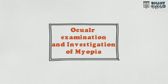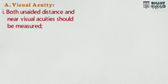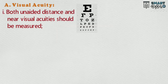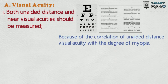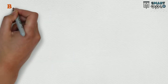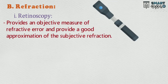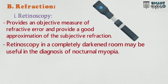Ocular examination and investigation of myopia. A. Visual acuity: 1. Both unaided distance and near visual acuity should be measured because of the correlation of unaided distance visual acuity with degree of myopia. 2. When the patient regularly uses an optical correction, aided visual acuity should be measured. B. Refraction: 1. Retinoscopy provides an objective measure of refractive error and a good approximation of subjective refraction. Retinoscopy in a completely darkened room may be useful in diagnosis of nocturnal myopia.